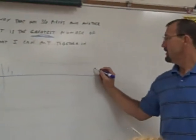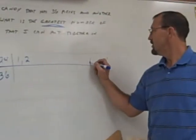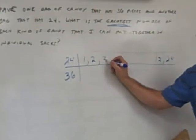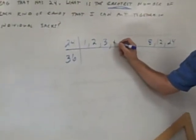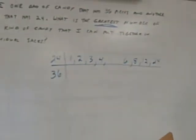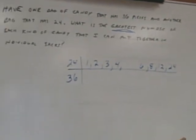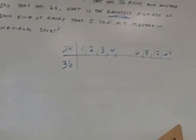Let's find them. One. Twenty-four. Two. Twelve. Three. Eight. Four. Six. Five. We're done. Five won't. Six is already up there, so I must have them all.